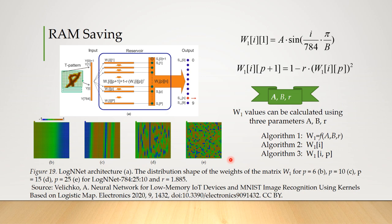Three variants of the algorithm can be proposed for W1 weights calculations. In algorithm 1, we calculate it using the equations for each new weight request. This is the slowest algorithm, but it consumes the least RAM. In algorithm 2, we use an auxiliary one-dimensional array. In algorithm 3, we use a two-dimensional array W1. It is the fastest algorithm, but it does not save RAM.